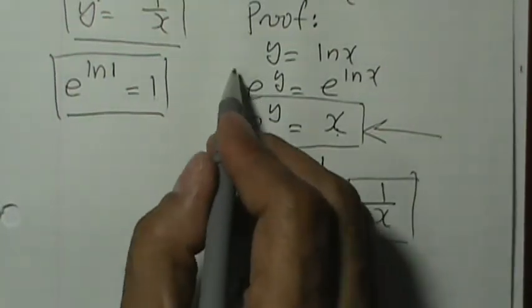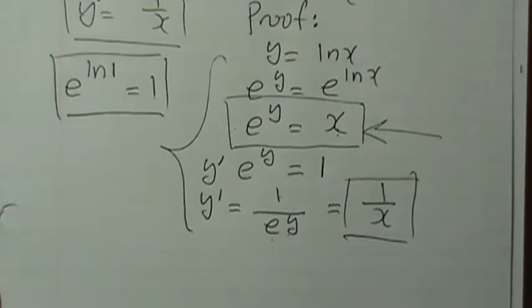And this is why, and this is the proof, that the derivative of y equals ln x is 1 over x. So I'm just going to leave it right here.